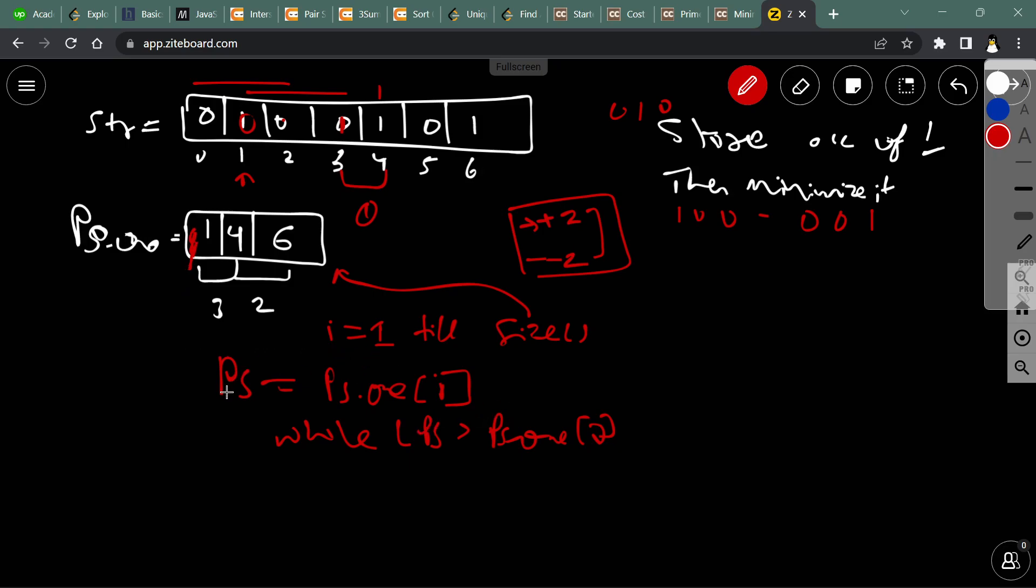If I choose this four, after reversing it will become position two. So this will become position two. Let's change the color.